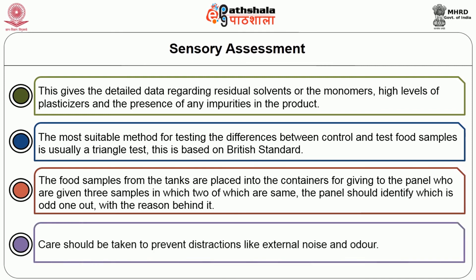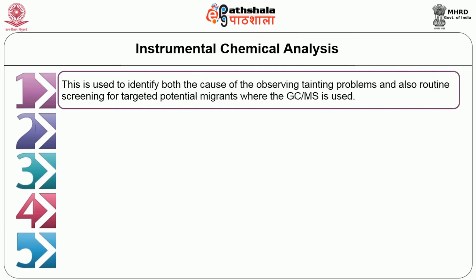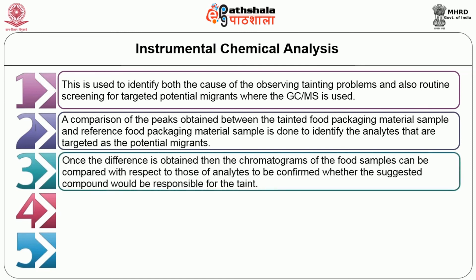Care should be taken to prevent distractions like external noise and odor. The second approach is instrumental chemical analysis. This is used to identify both the cause of observed tainting problems and also for routine screening for targeted potential migrants, where GC-MS is used. A comparison of the peaks obtained between the tainted food packaging material sample and the reference food packaging material sample is done to identify the analytes targeted as potential migrants. Once the difference is obtained, the chromatograms of the food samples can be compared to confirm whether the suggested compound would be responsible for the taint.